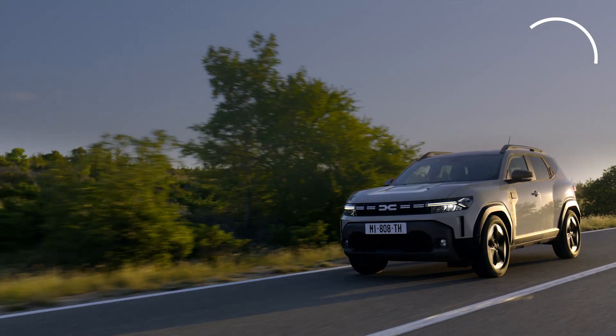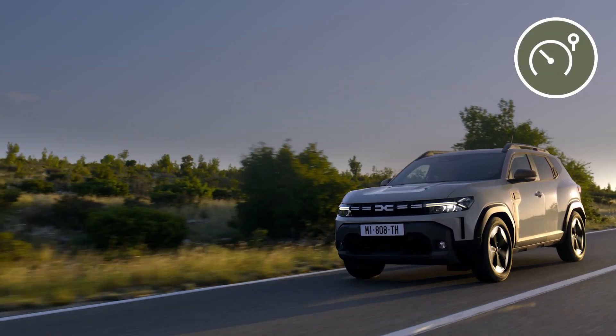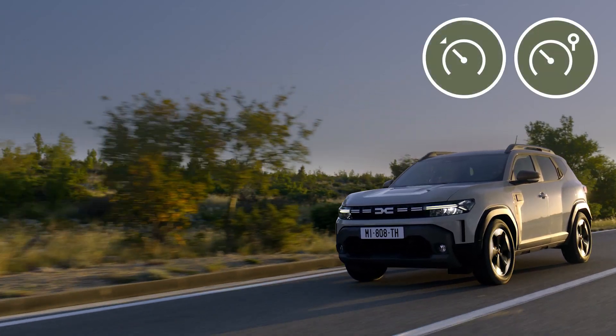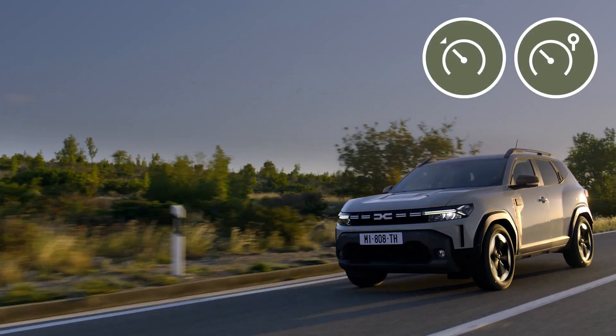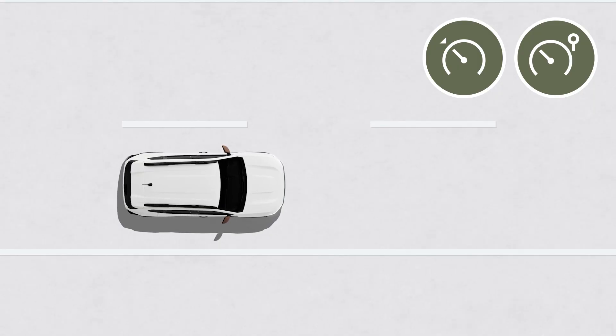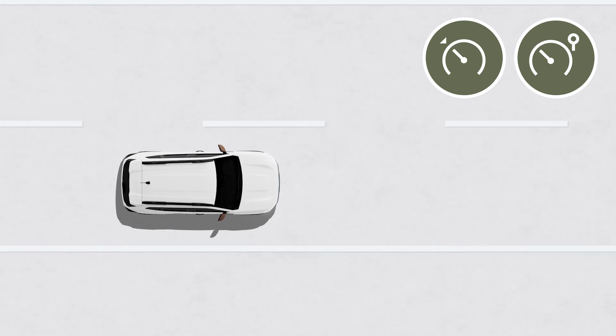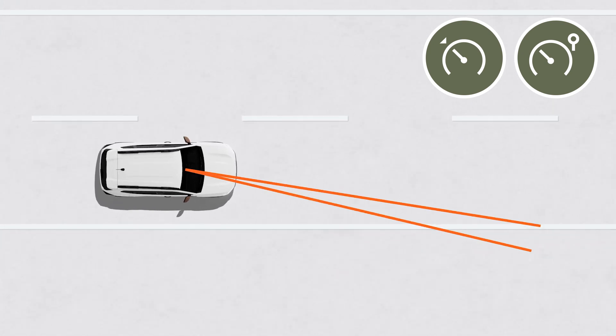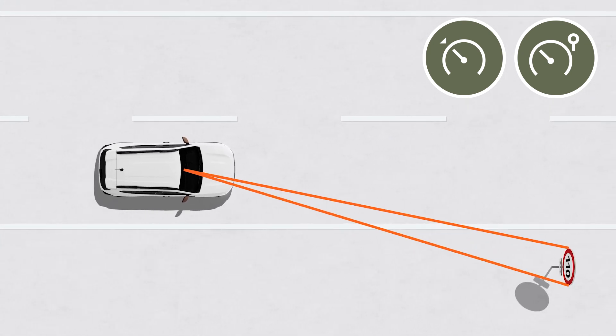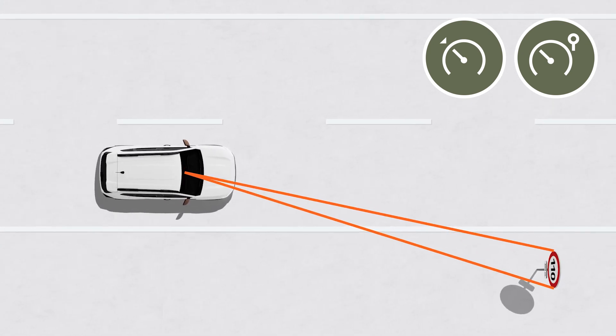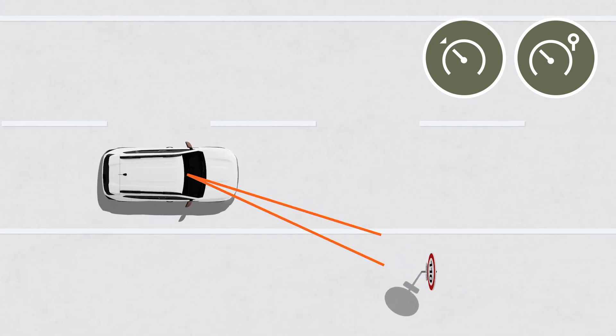Also, when the speed limiter or cruise control are on, you can press this button to adjust the speed limit set point to keep to the speeds detected on traffic signs.